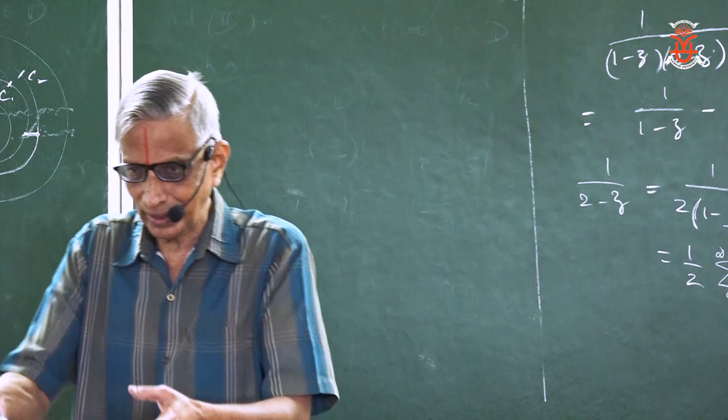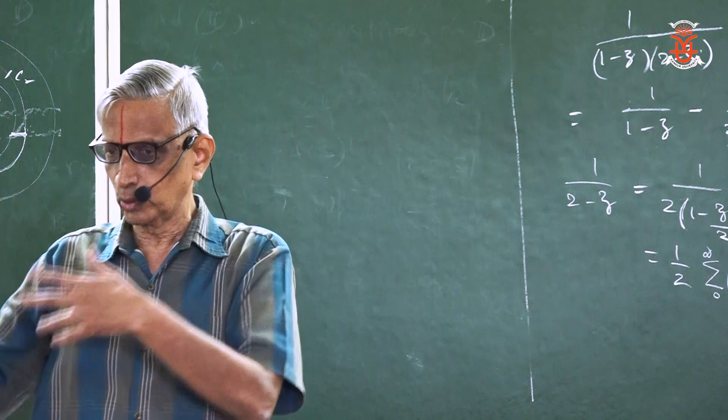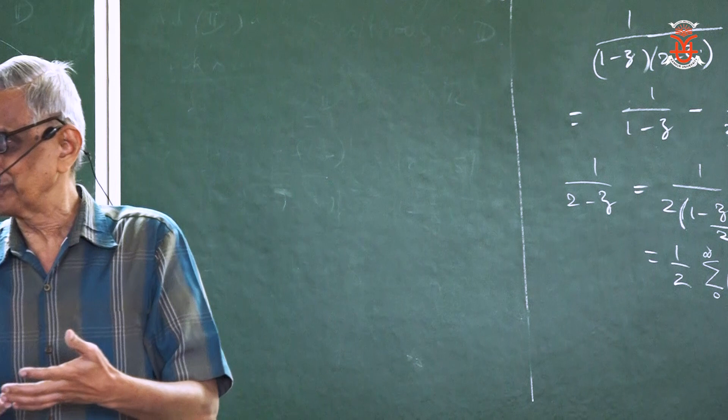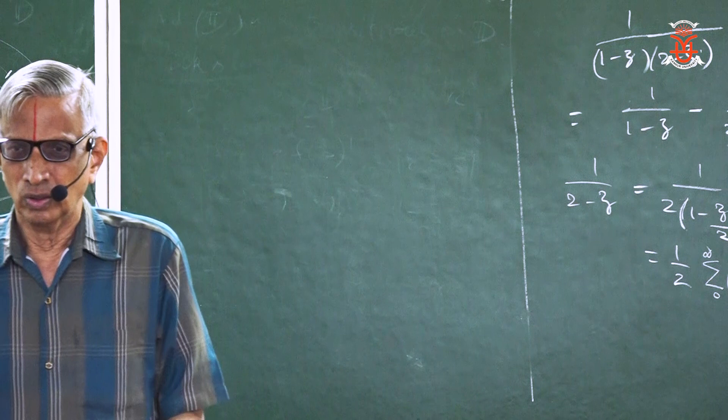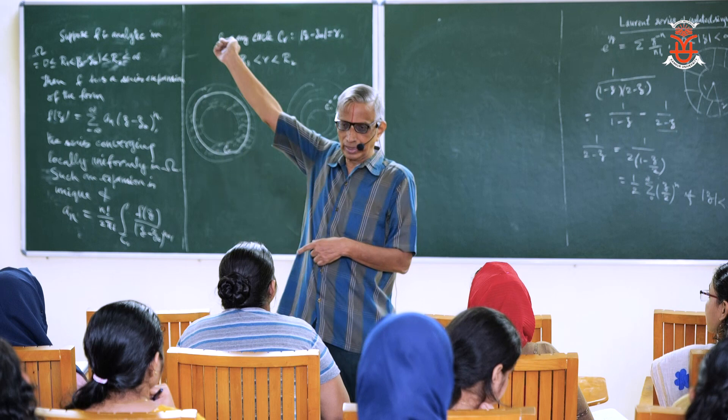When you say the expansion is unique, the coefficients are unique. Any expansion will have these same coefficients. Because of uniqueness, it's not necessary to calculate coefficients using integrals. If you can get a series expansion in any way — for example, using geometric series as we did — that is going to be the Laurent expansion. For rational functions, factorize the denominator and use partial fractions with a similar technique.